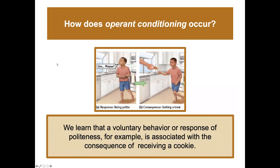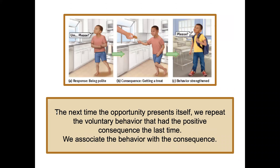For example, we learn that a voluntary behavior — like politeness — is associated with a consequence of receiving a cookie. The thought is that if a person wants the cookie, this makes it more likely for them to repeat that behavior in the future. So the next time the opportunity presents itself, we repeat the voluntary behavior that had the positive consequence, associating the behavior with its consequence.